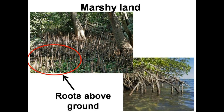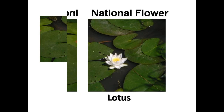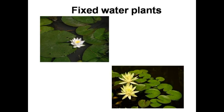Those are called pneumatophores. This is our national flower, the lotus. We all know that lotus grows in a pond. Similarly, some other plants grow in water only — those are called aquatic plants. Roots of some aquatic plants like lotus and water lilies are fixed in mud. Their big round leaves float over the surface of the water, and their stems are very flexible so they don't get damaged by strong water flow.